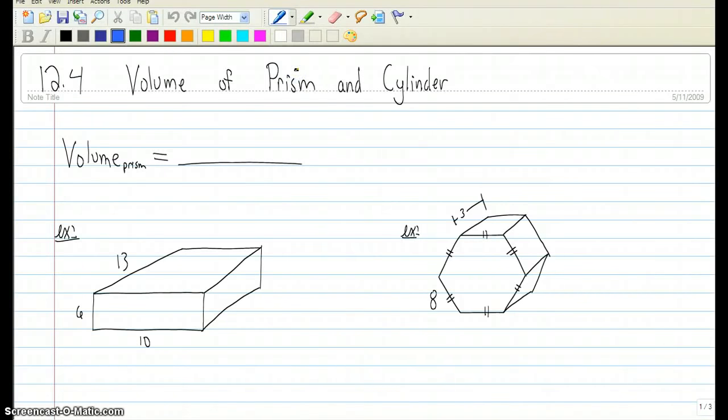This is section 12.4 and we're looking at finding the volume of a prism and cylinder. First of all, the standard formula for the volume of a prism is the area of the base times the perpendicular height.